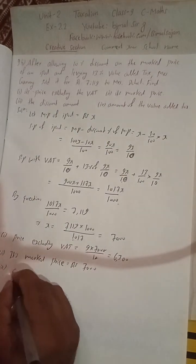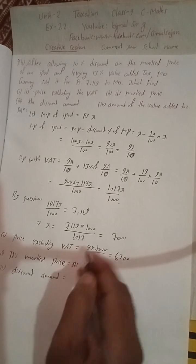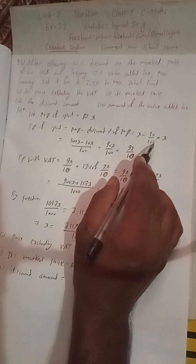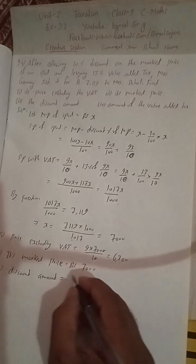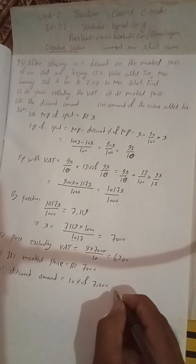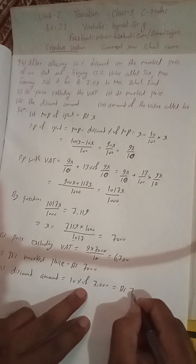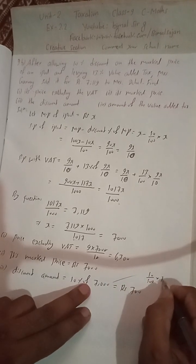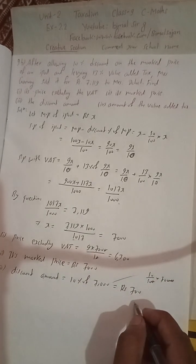Number three, the discount amount. Discount amount is the discount of 10 percent, that is 10x by 100. That is 10 percent of marked price, which is 7000, so this will be Rs. 700. You can do this step: 10 percent means divided by 100 times 7000. Cancel the zeros and you get 700.